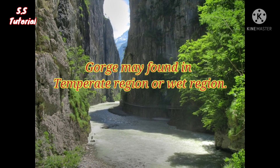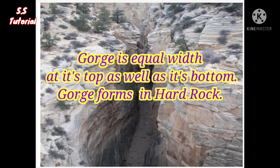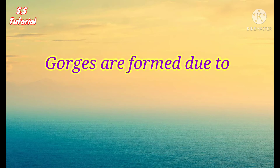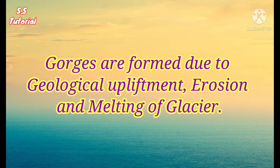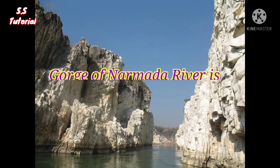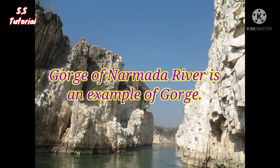When a narrow, deep and steep-sided river valley forms in a temperate region or wet region, which has equal width at its top as well as its bottom, and usually forms in hard rock, then this type of river valley is known as a Gorge. Gorges are formed due to erosion, geological upliftment and melting of glaciers. The Gorge of the Narmada river in Jabalpur, India, is a notable example of a Gorge.